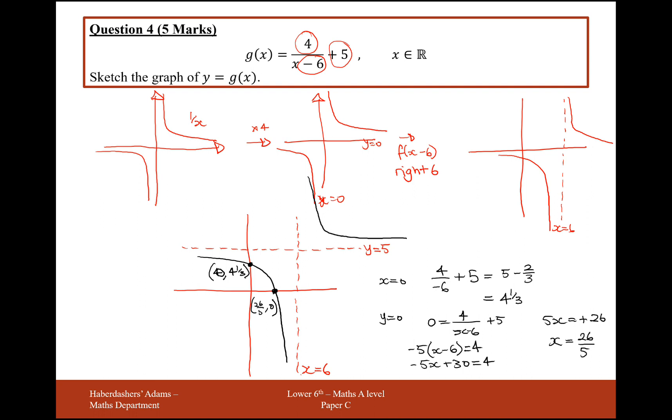Okay, so there we are, a 1 over x graph, 2 graph intersections, coordinates, and a rough shape of 1 over x. Great, 5 marks.